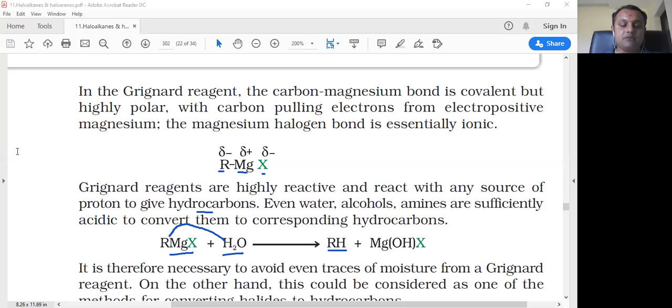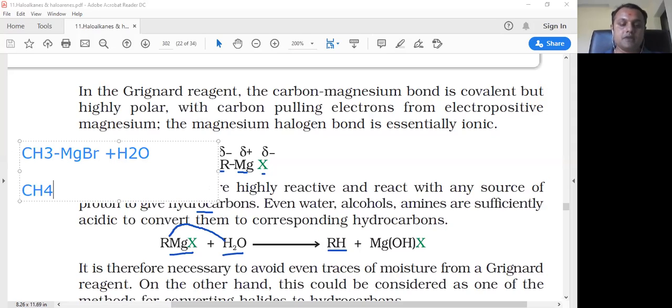For example, CH3MgBr (methyl magnesium bromide) reacts with water to give CH4 methane as the final product. Whenever Grignard reagent reacts with water and any acid, it converts into hydrocarbon.